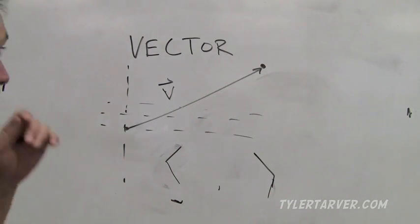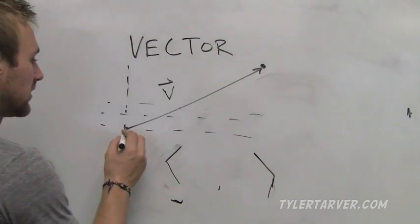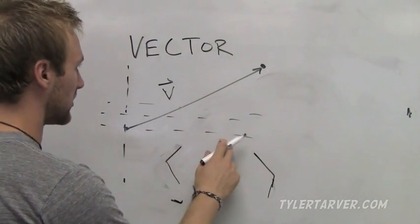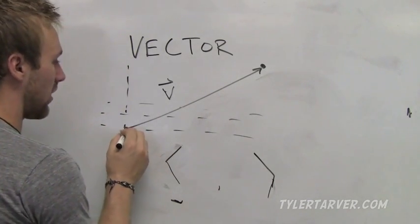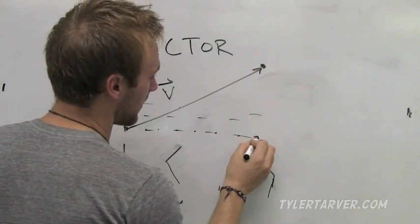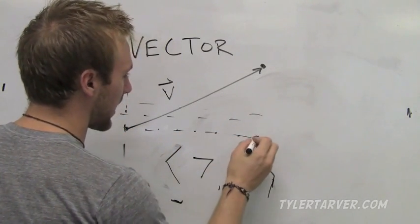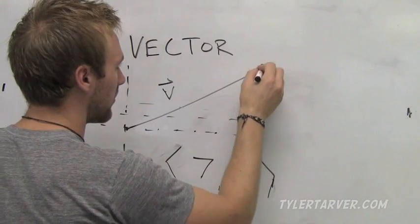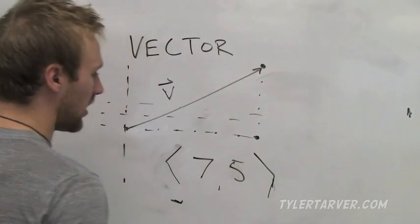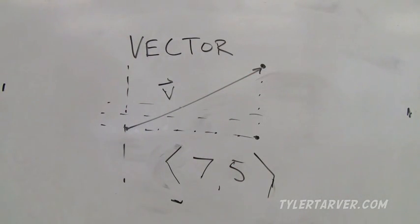We just count and we find x and y. So we find the, I'm sorry, first we're doing x so it's how far we go over. We just count one two three four five six seven, seven. And then we count up one two three four five, five. So that is the component form.